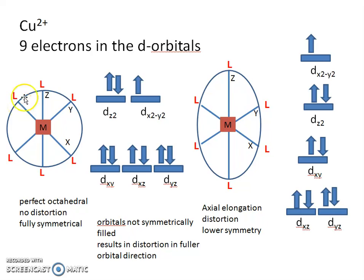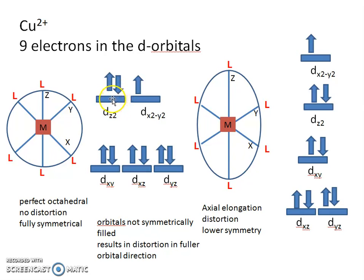In an undistorted octahedral, you have two orbitals at higher energy: the d_z² and the d_(x²-y²), which are degenerate. And there are three orbitals at lower energy: the d_xy, d_xz, and d_yz. With nine electrons filling these orbitals, we end up in a situation where either the d_z² or the d_(x²-y²) has two electrons while the other has one — so these two higher-energy orbitals are not equally filled.